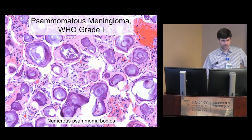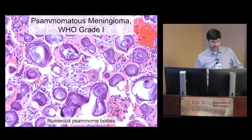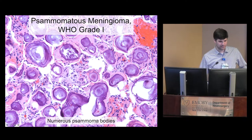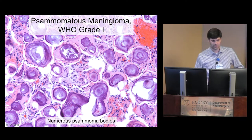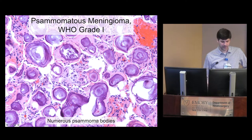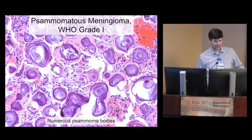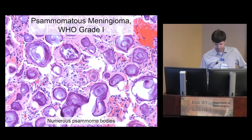A psammomatous meningioma shows tons and tons of psammoma bodies. These are grade 1 almost all the time and are seen frequently along the spine.